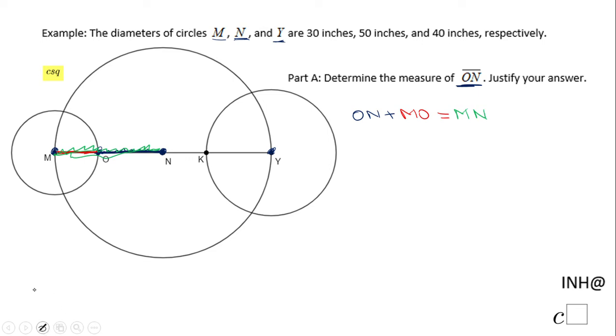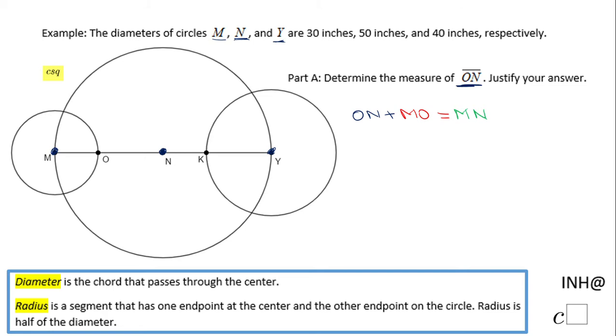Now we have to take a look at how long ON is, how long MO is. For that reason we're going to go back to the beginning of the problem. Remember we have the three circles, and we have the diameter of these three circles. The diameter of circle M is 30 inches. If you take a look, MO, this segment is the radius of circle M, so MO will be half of the diameter of circle M, which is 30 inches, so that will be 15.